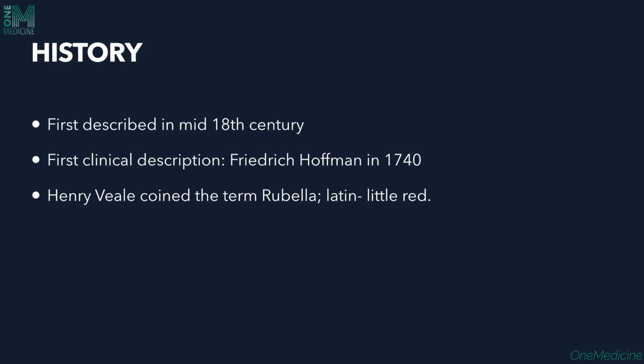A little bit about the history: rubella was first described in the mid-18th century. The first clinical description was given by Frederick Hoffman in 1740. Henry Reel coined the term rubella. Rubella in Latin means 'little red,' which refers to the red-colored lesions that appear on the skin.